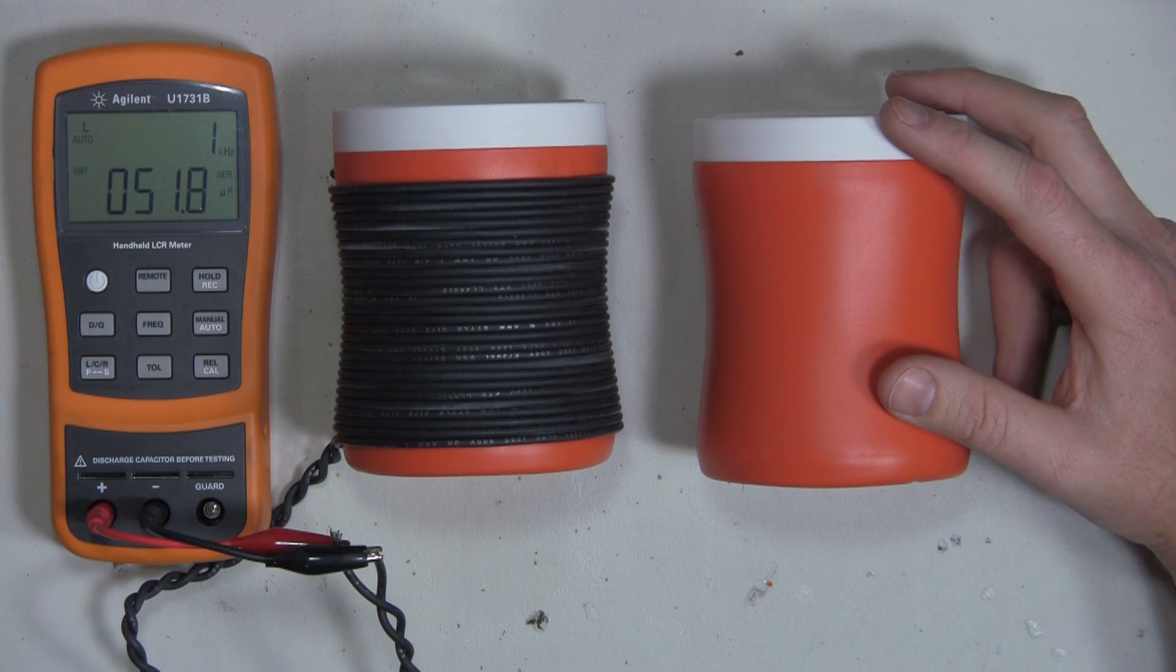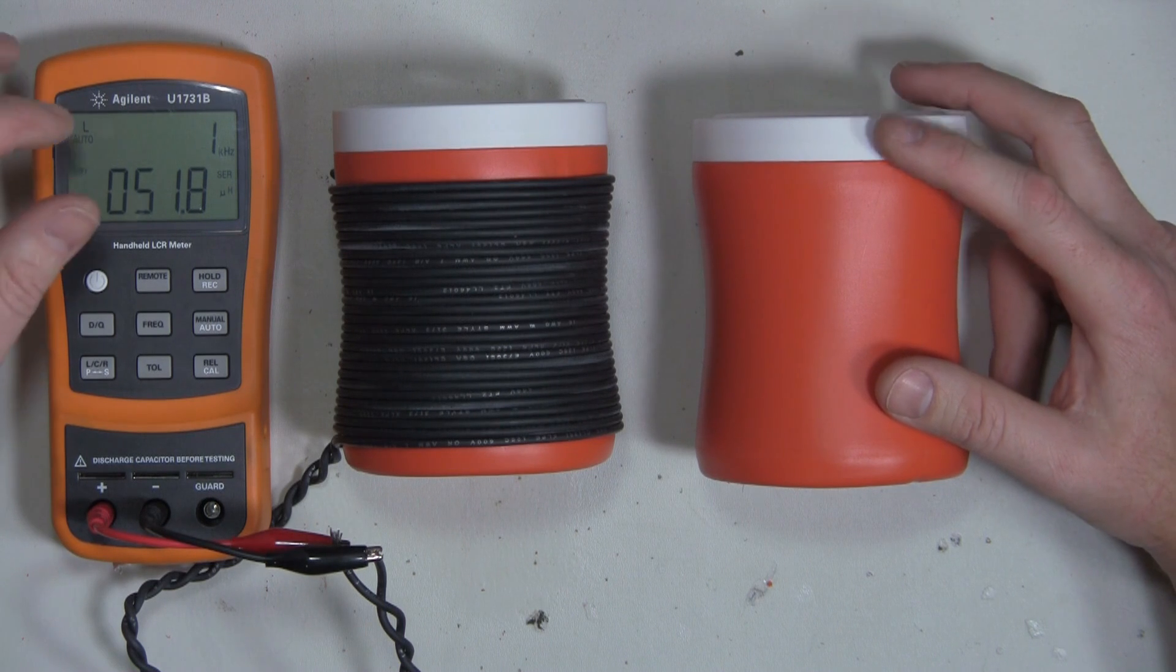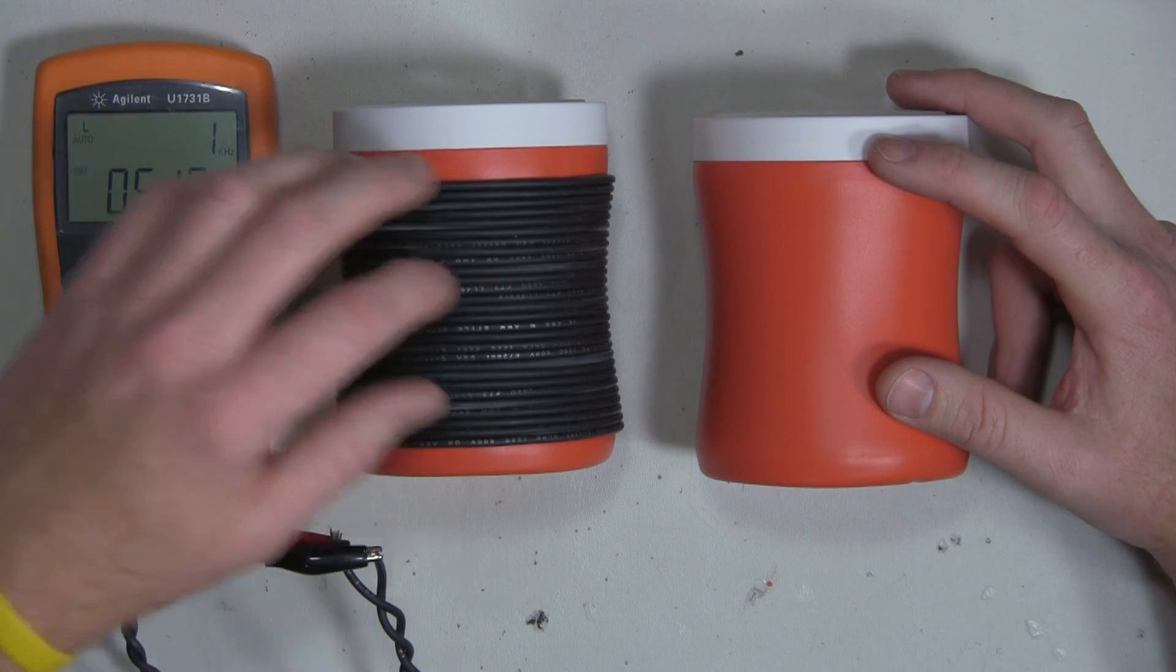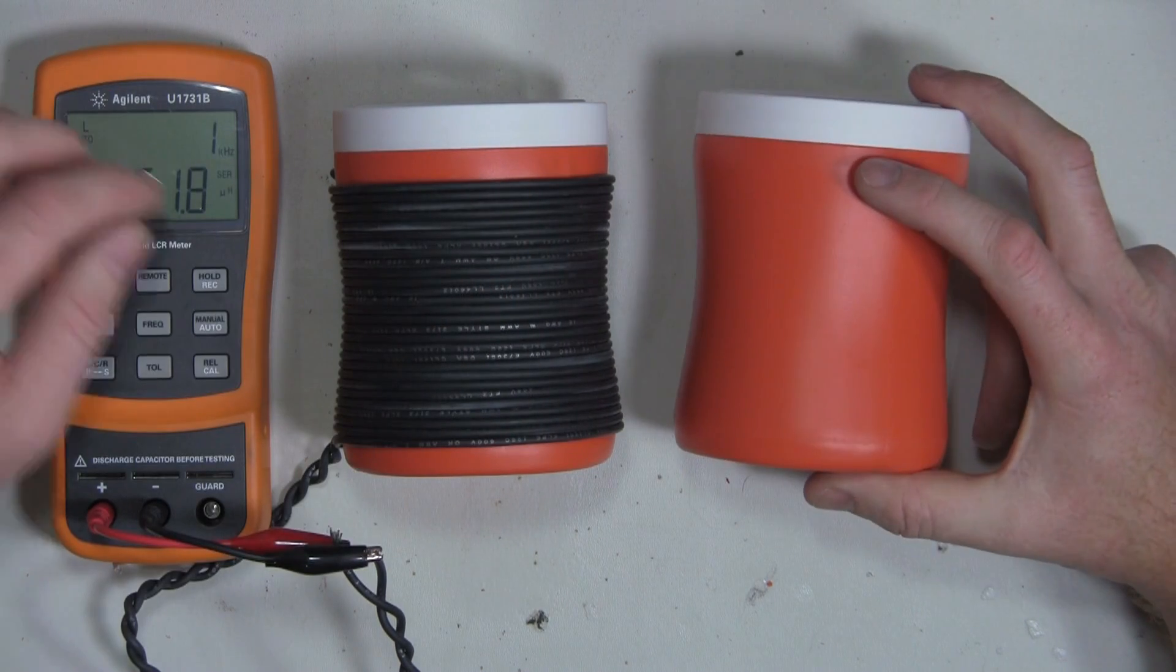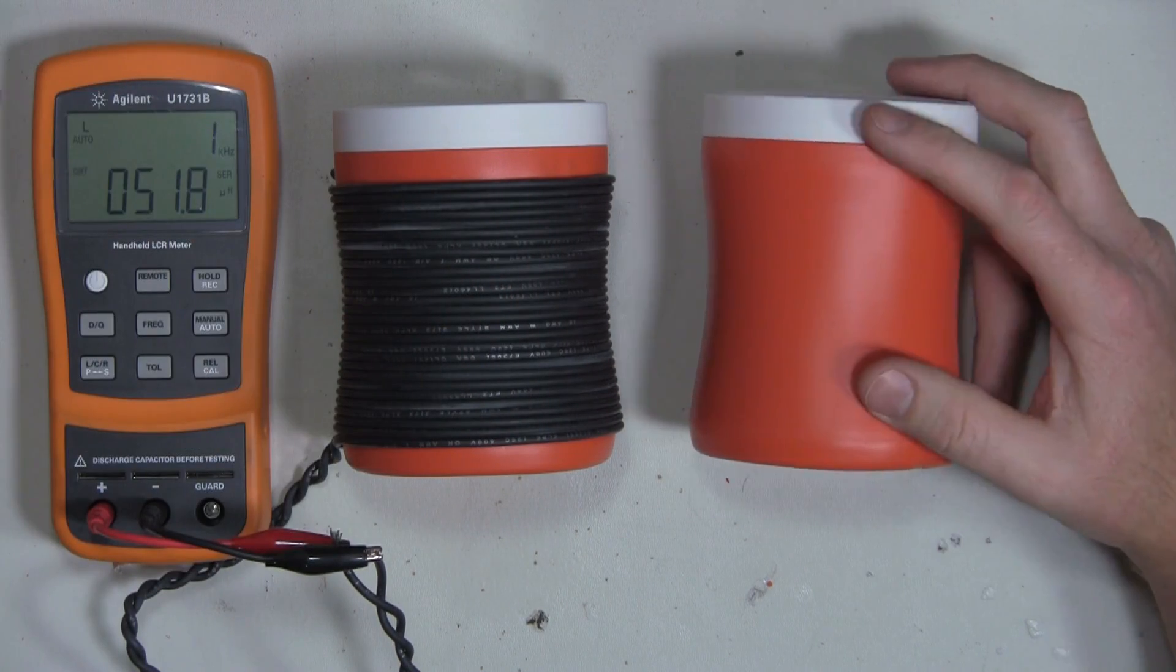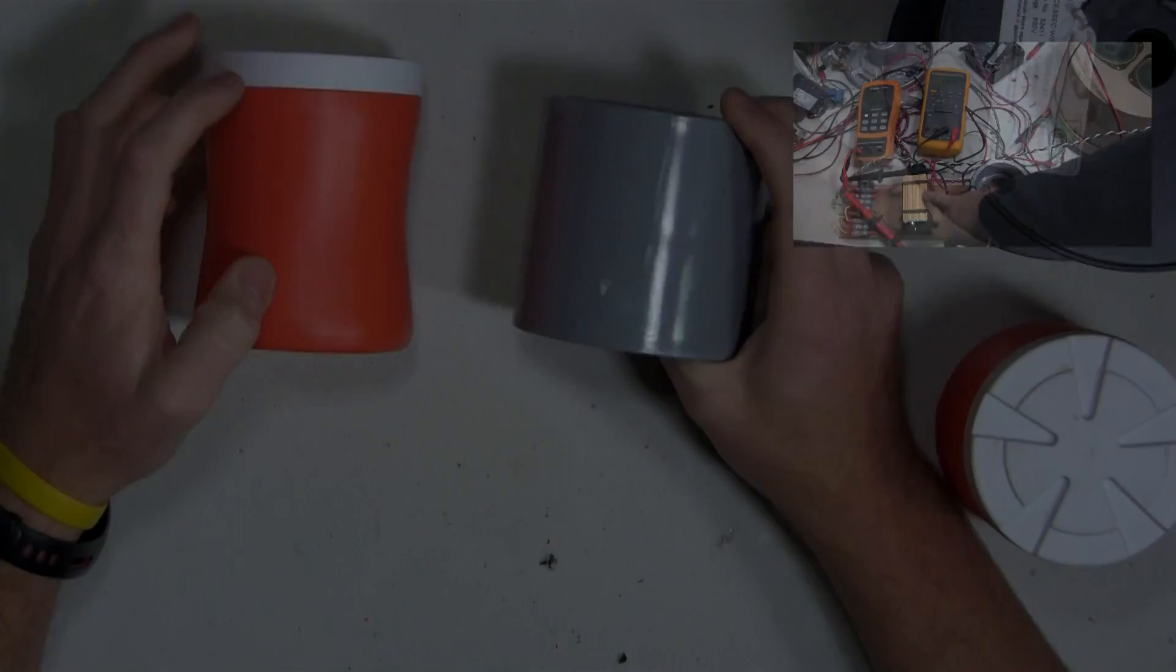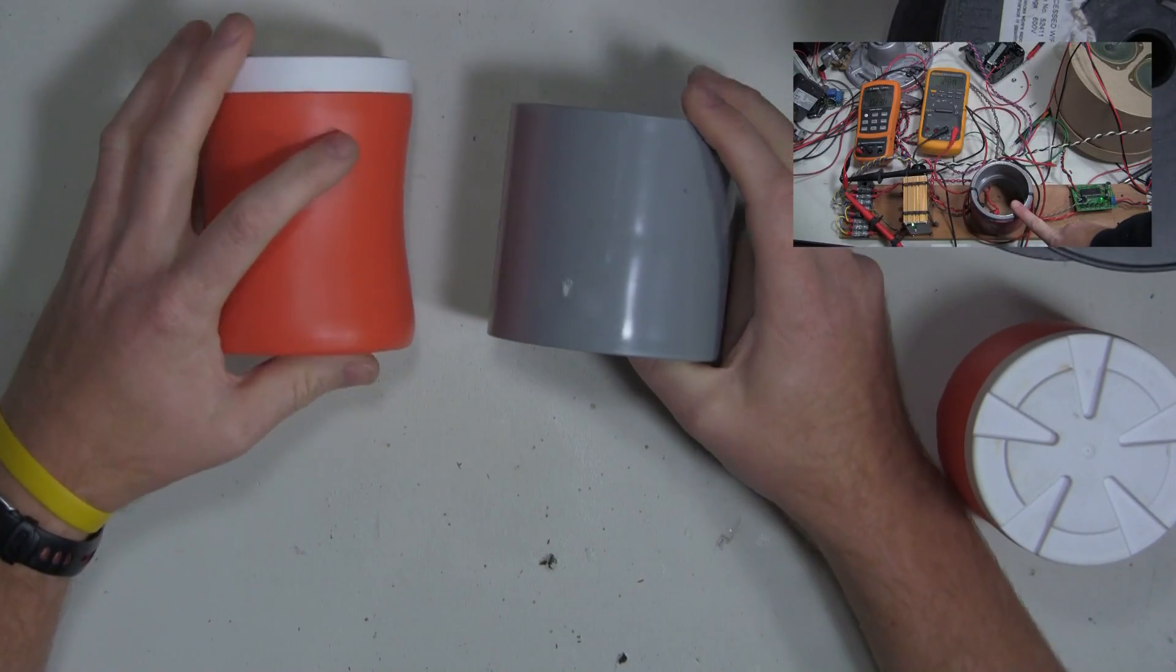If you ever needed to test a loop detector with a good load, this is a way for you to make a test loop out of a Gatorade can and some extra XLPE wire that you have laying around. I needed to fabricate a couple more test loops.